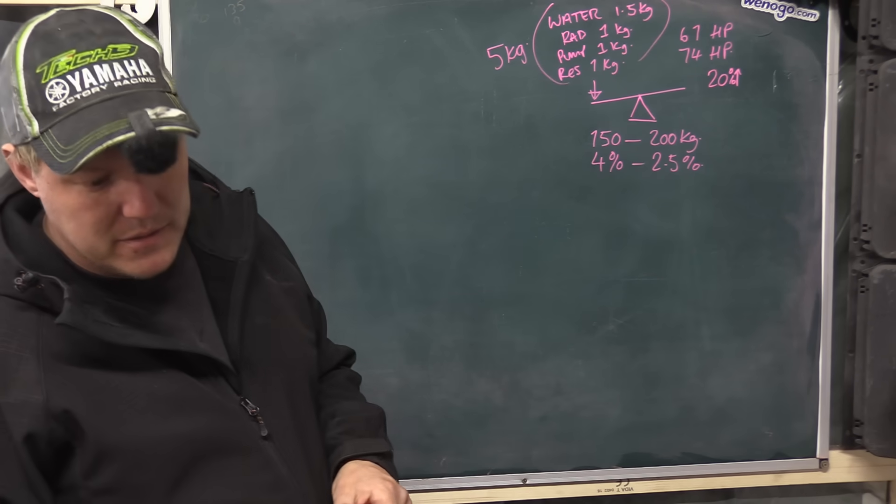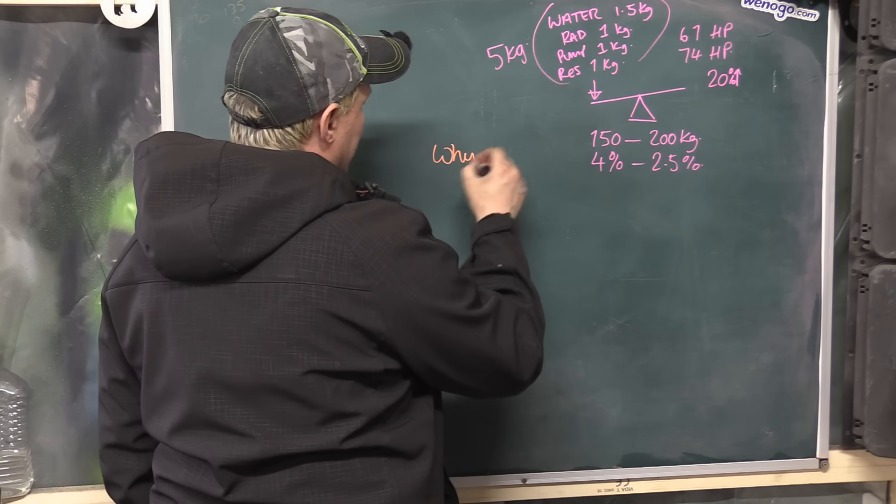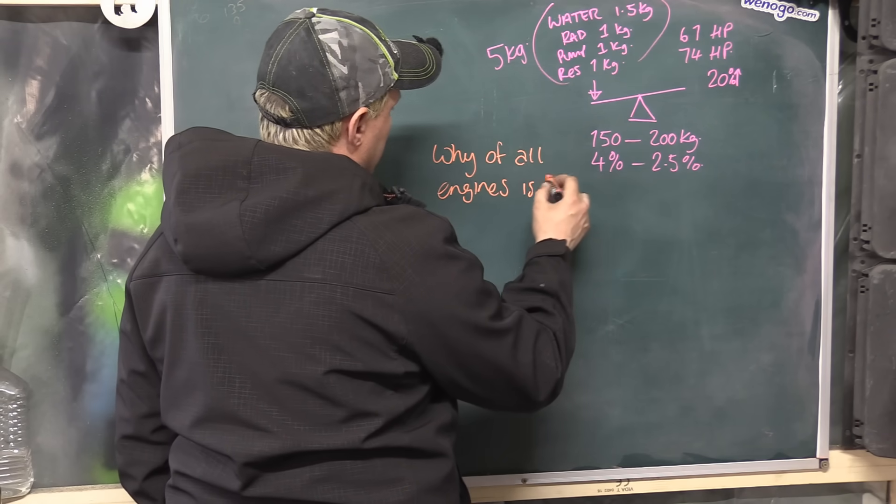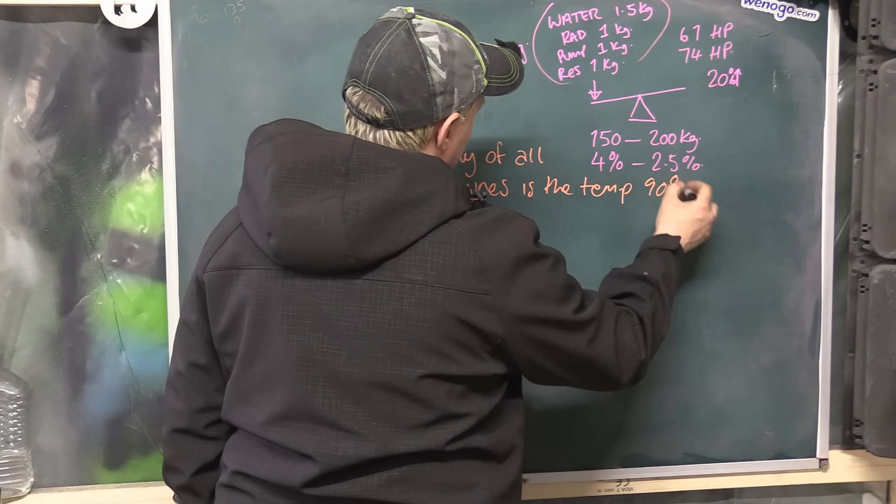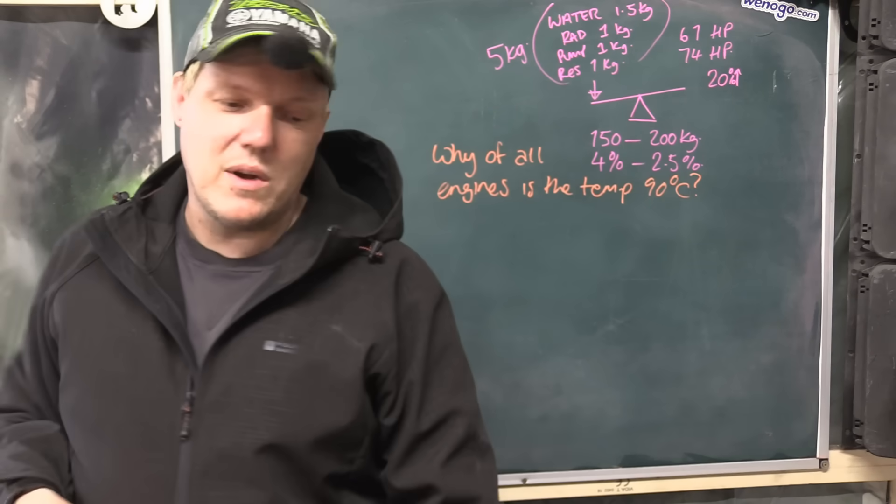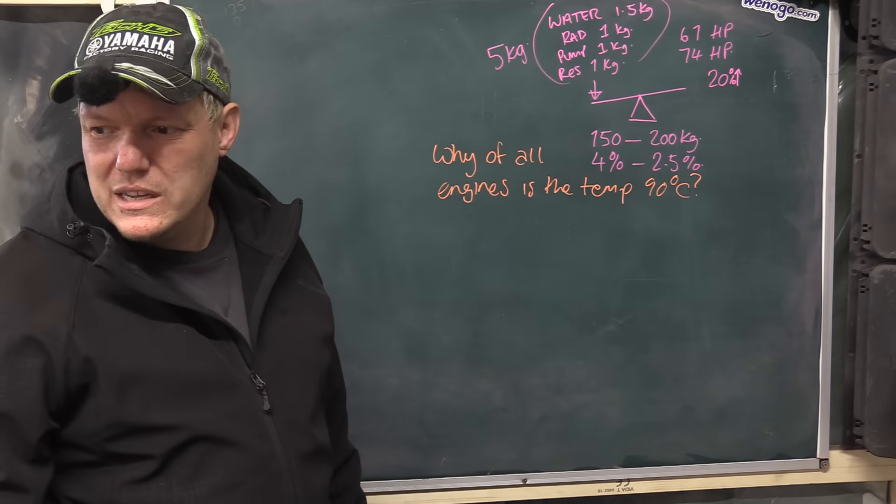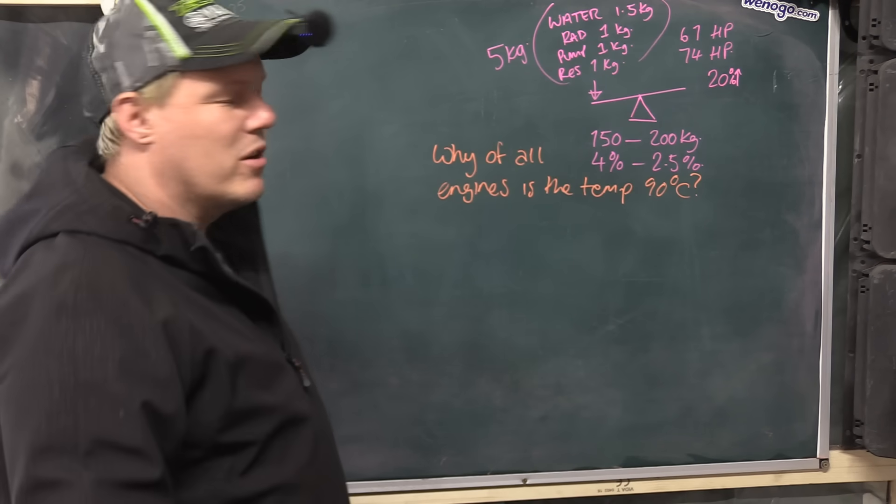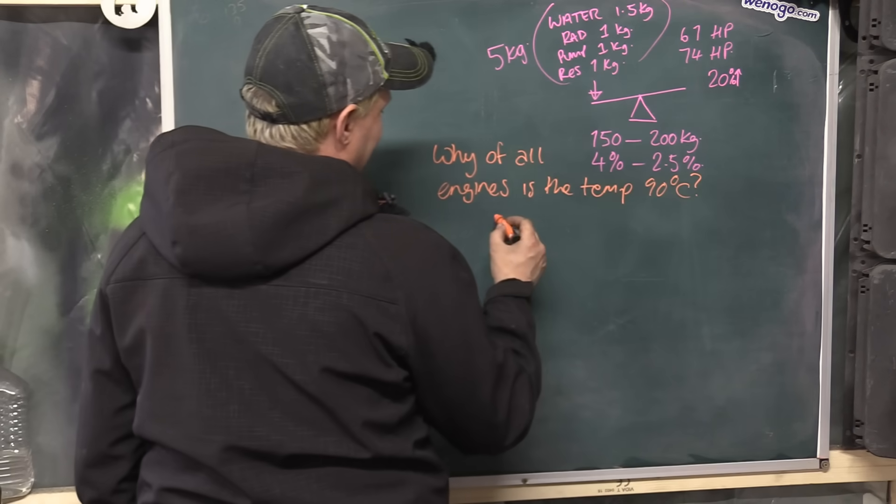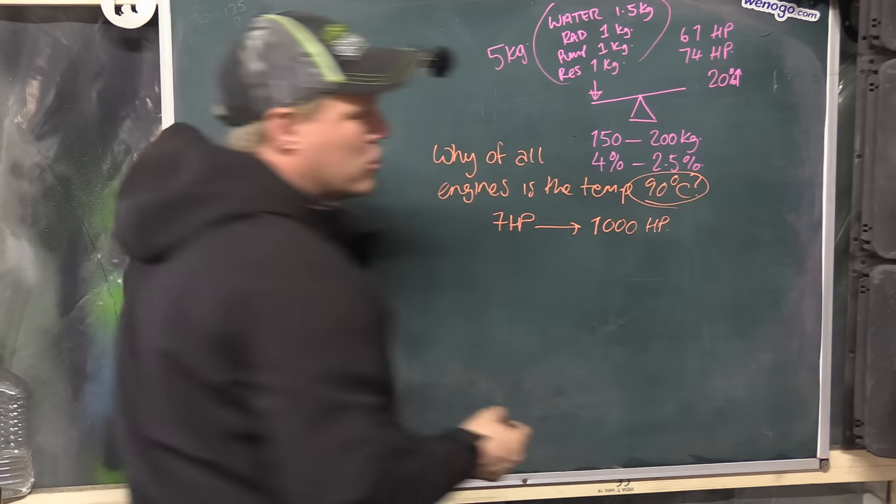The next question that someone had, which was just on the regular YouTubes, was why, it was why of all engines, is the temp 90 degrees? So you said basically, you'll have a Bugatti Veyron, and a H2R, and a CG125, and a Renault Clio, and all of these other jazz cars, whatever. How come they're all 90 degrees? If, you know, you range from power from just, say, 7 horsepower, all the way up to just, say, 1,000 horsepower, how come that the operating temperature is always somewhere around there?